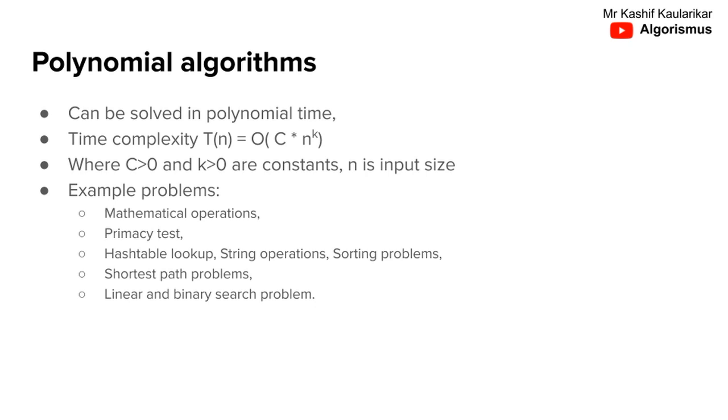If an algorithm is polynomial, we can formally define its time complexity as Big O of c times n raised to k, where c and k are constants greater than 0 and n is input size. We expect k should be less than n.